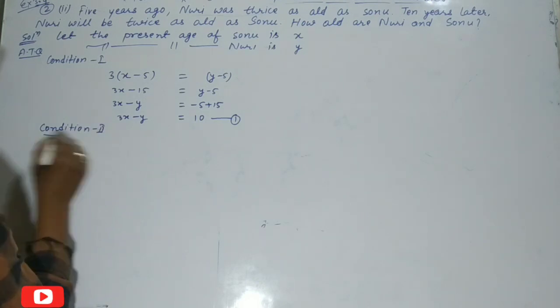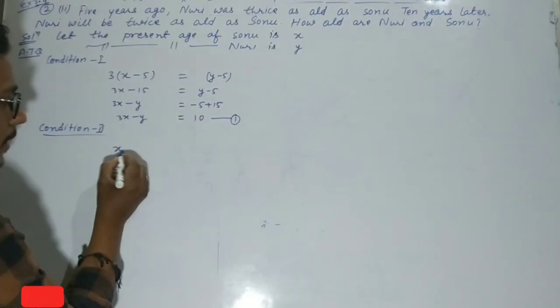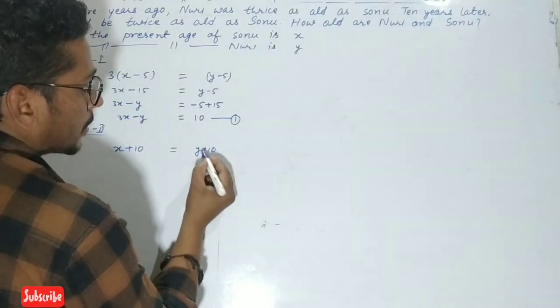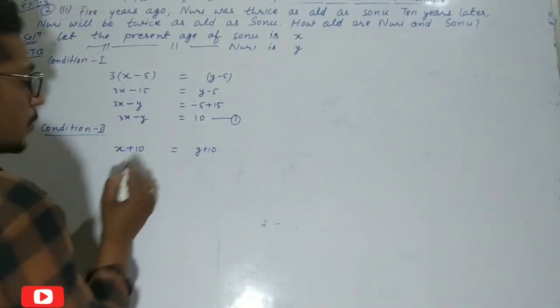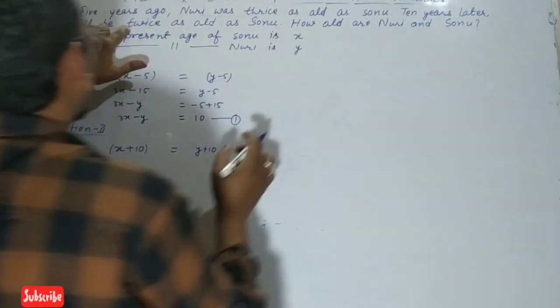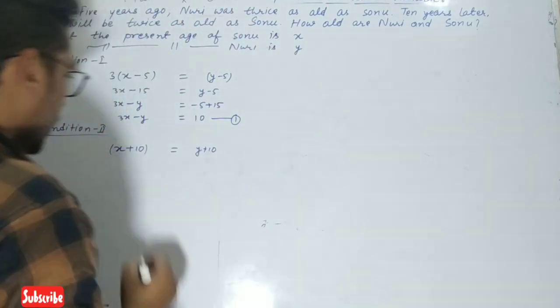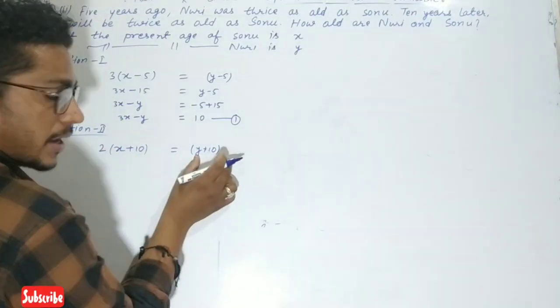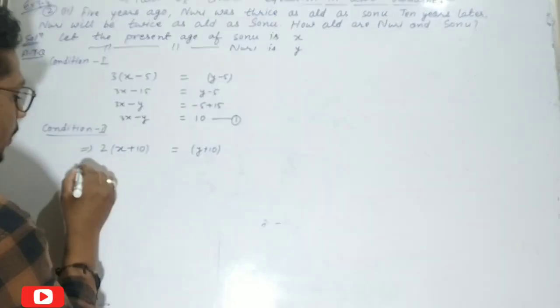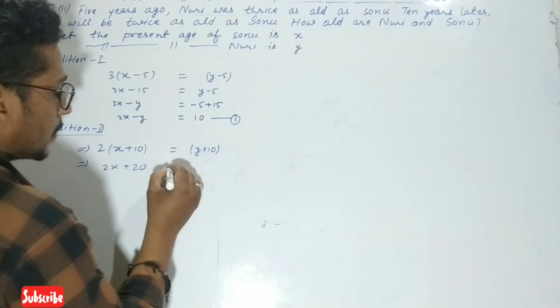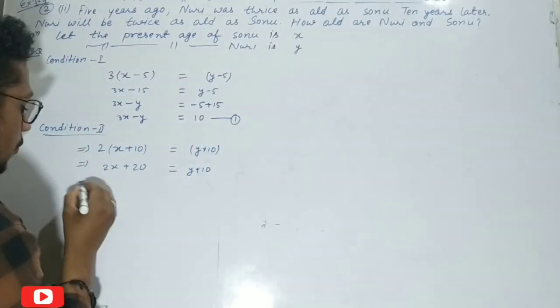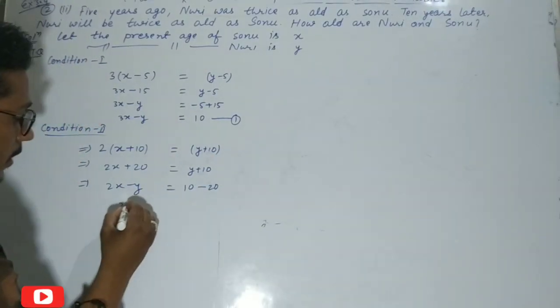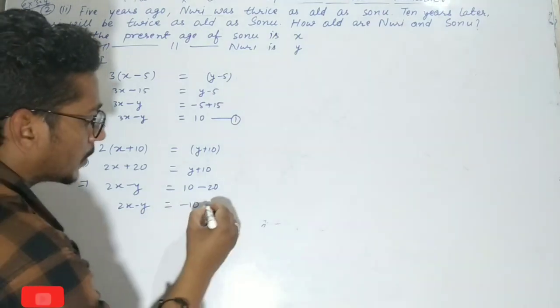Condition 2: 10 years later, the ages will be x+10 and y+10. Nuri will be twice as old as Sonu, so y+10 = 2(x+10). This gives us 2x - y = -10. This is equation number 2.